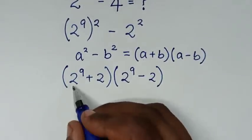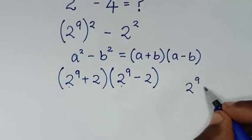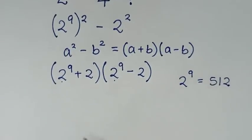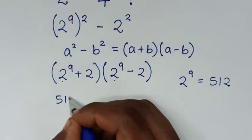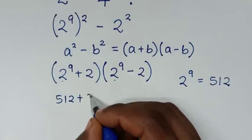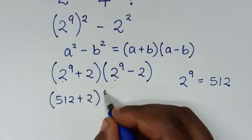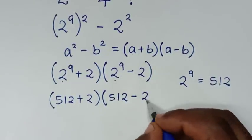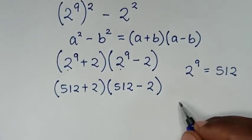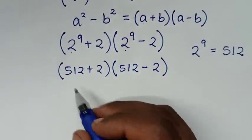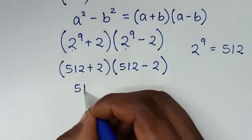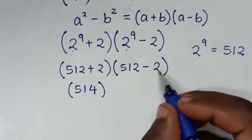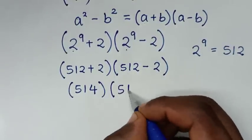Now 2 power of 9 is equal to 512. So we substitute 512 here: (512 plus 2) times (512 minus 2). Then in the next step, we add and subtract: it will be (514) times (510).